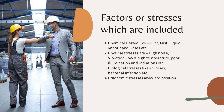The factors or stresses included are: first, chemical hazards — such as dust, mist, liquid, vapor, and gases — which have the potential to affect industrial hygiene. Second is physical stress, which involves stresses on the worker in a physical mode, including high noise, high vibration, low and high temperature, poor illumination, and radiation. These all need to be taken care of when talking about industrial hygiene.